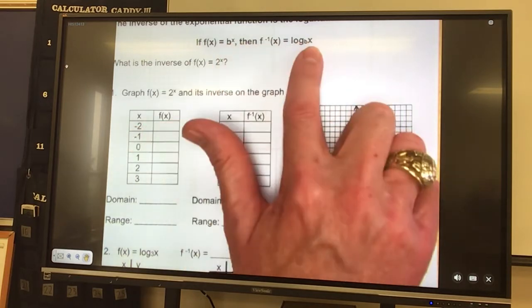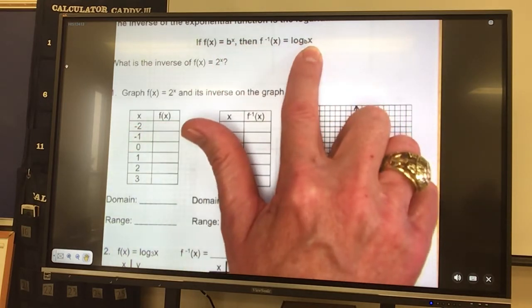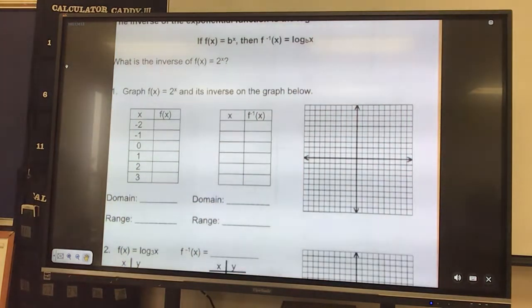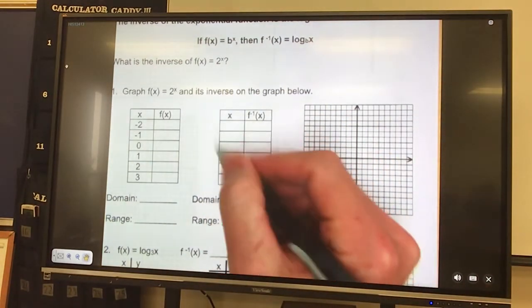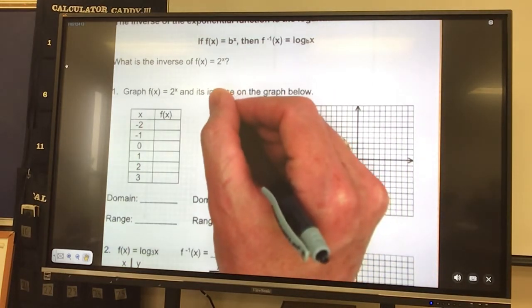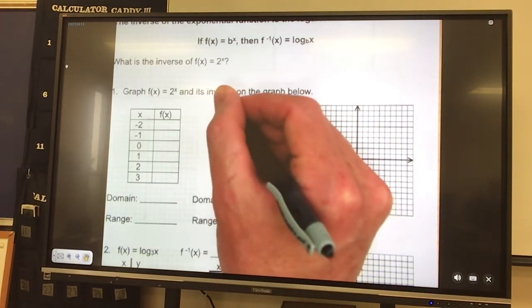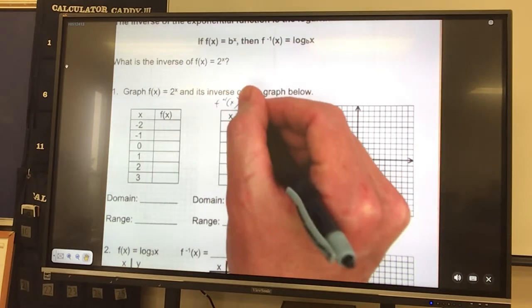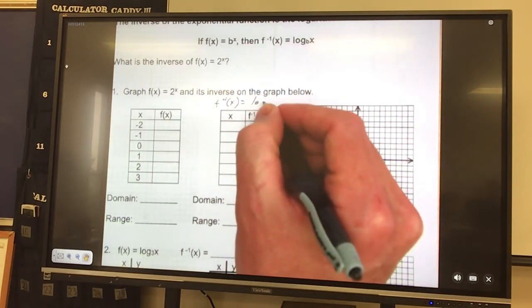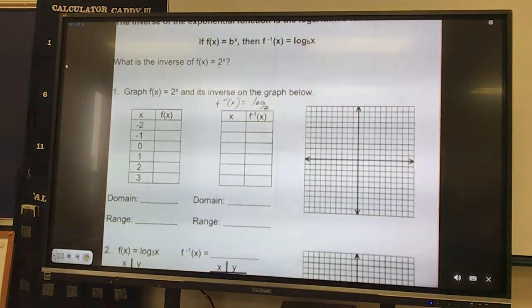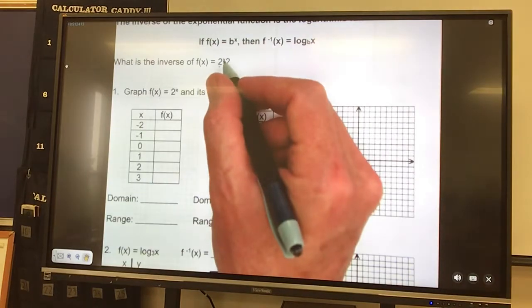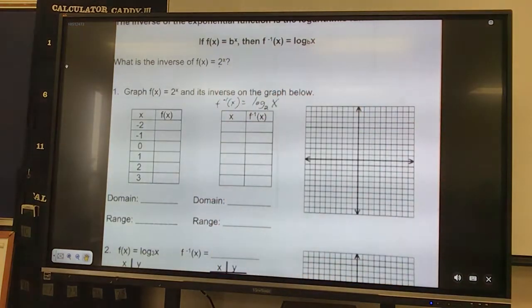So the base of the exponential would be the base of your log. Whatever your exponent is becomes the whole number of your log. So for this guy here, this guy here is exponential. When I write the inverse of it, it would be f⁻¹(x) equals log base 2 of x. The exponent x, that becomes my whole number.